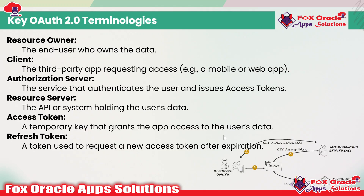Let's talk about the key terminologies of OAuth 2.0. The first is the resource owner — the end user who owns the data. Next we have the client — the third-party application requesting access, for example a mobile app, a web application, a desktop application, or any third-party system that wants to access data. We have the authorization server, which authenticates the user and issues the token. We have the resource server — the API or service holding the user's data. The access token is a temporary key that grants the app access to the user's data. And we have the refresh token — a token used to request a new access token after the previous token expires.